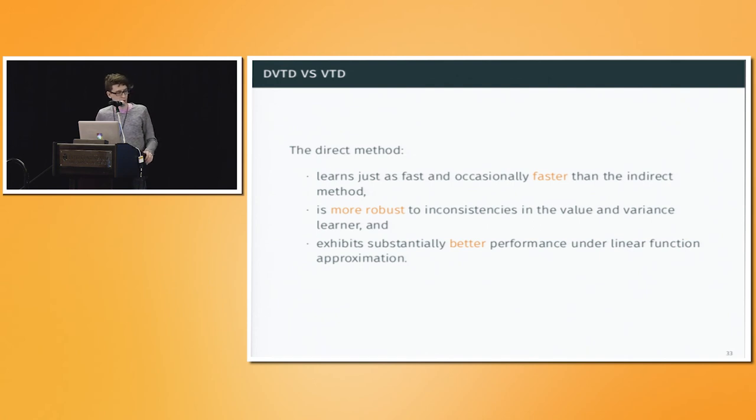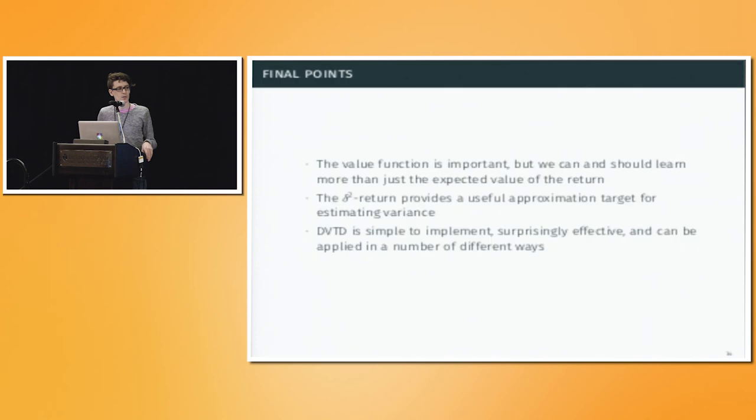So, if I were to summarize the conclusions of the paper, we have that the direct method learns just as fast as VTD, and usually faster. It's more robust to changes in hyperparameters, and it exhibits substantially better performance especially under linear function approximation than VTD. We have more results. See the paper, come by our poster. My colleague and I will be happy to answer questions. These conclusions are backed up by just about every experiment that we've done.